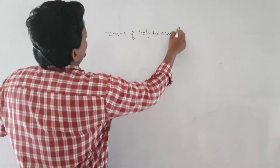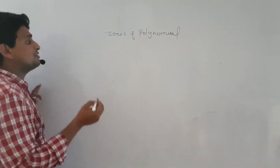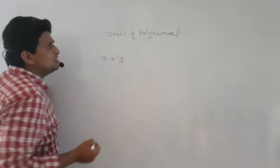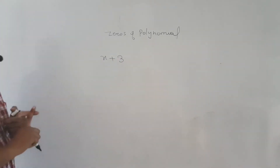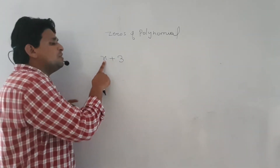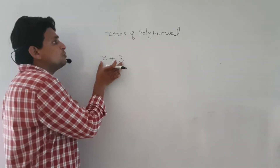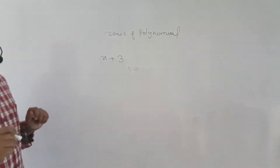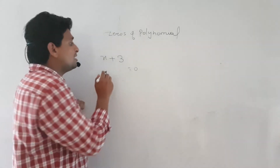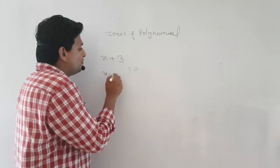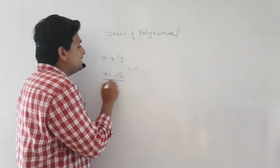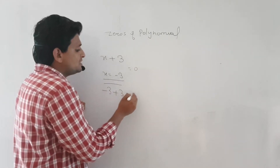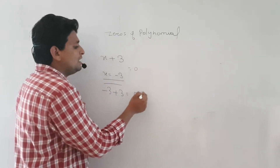What is zero of polynomial? I have written an equation here: x plus 3. Zero of polynomial means this — I will put a value in it to make the expression equal to zero. So what can I put here? If I put x equal to minus 3, then what will become your expression? Minus 3 plus 3, which becomes zero.